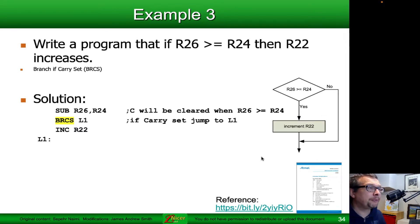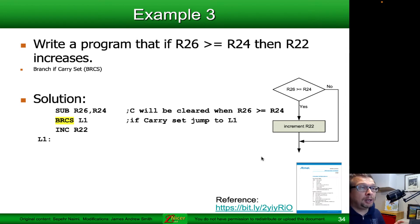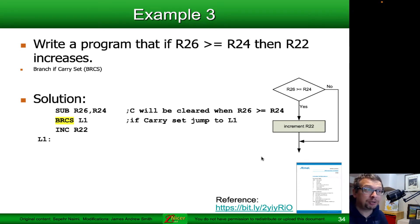Third example: write a program that if the contents of R26 is greater than or equal to the contents of R24, then we increase the value in R22. Here we use branch if carry set (BRCS) — looking to see if the carry bit equals 1. We do SUB R26, R24. The carry bit will be cleared when R26 is greater than or equal to R24. If carry is set (1), we jump to L1 and bypass the increment. If cleared, we go and do the increment of R22.